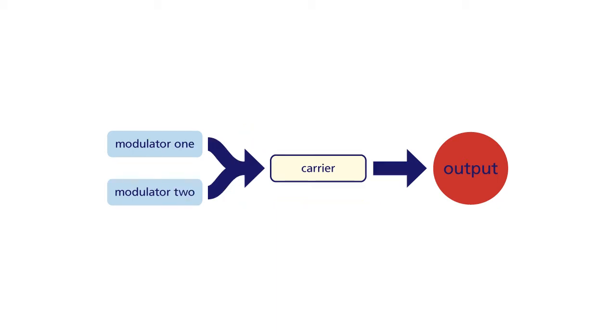The next algorithm that I want to look at uses parallel modulators. With this combination, there are two modulators and one carrier which is connected to the output. Again, you can think of this as being like two simple stacks, but this time with a common carrier. If the modulators are set at the same pitch, then each modulation will create the same sound, so the only effect of the combination will be an increase in the effect of the modulation.